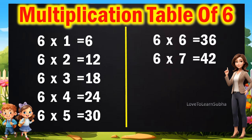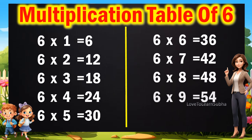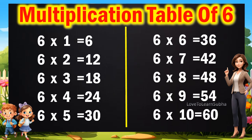6 sevens are 42. 6 eights are 48. 6 nines are 54. 6 tens are 64.